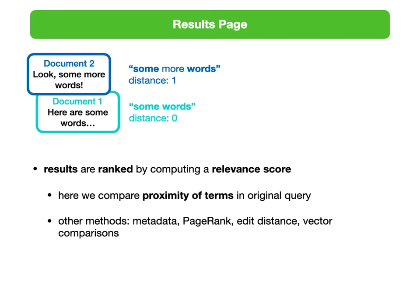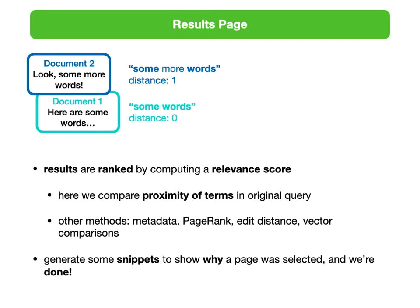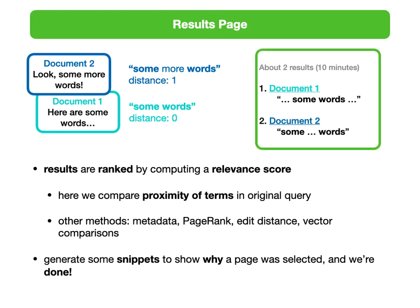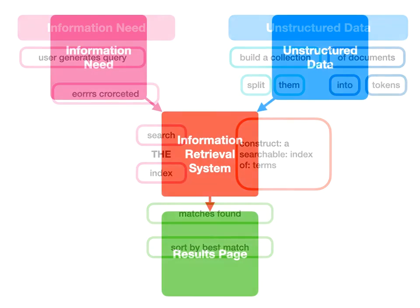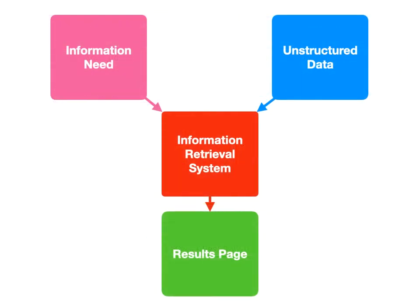We can use all kinds of information to rank results — metadata like whether the title is more important than body text, edit distance for exact content comparison, or comparing documents at a vector level. The idea is that we've found a way to rank the documents. We'll also generate snippets to show why a page was selected — a good search engine shows you where in the document your search terms came up. Finally, after matches are found, we sort by best match — and that is our information retrieval system.